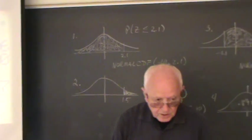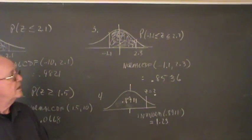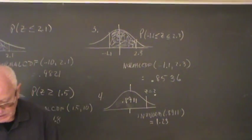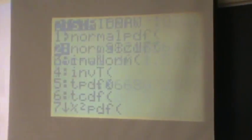Now, the third problem, I want to find the probability that Z is between negative 1.1 and 2.3 standard deviations. So back to the second distribution, normal CDF.